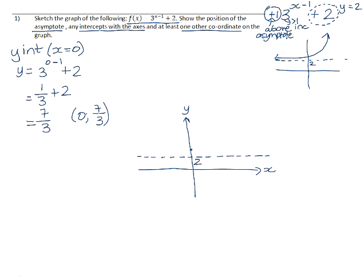7 over 3 is 2 and a third. So that will be the position over there, which will be 2 thirds. That will cut the y-axis.